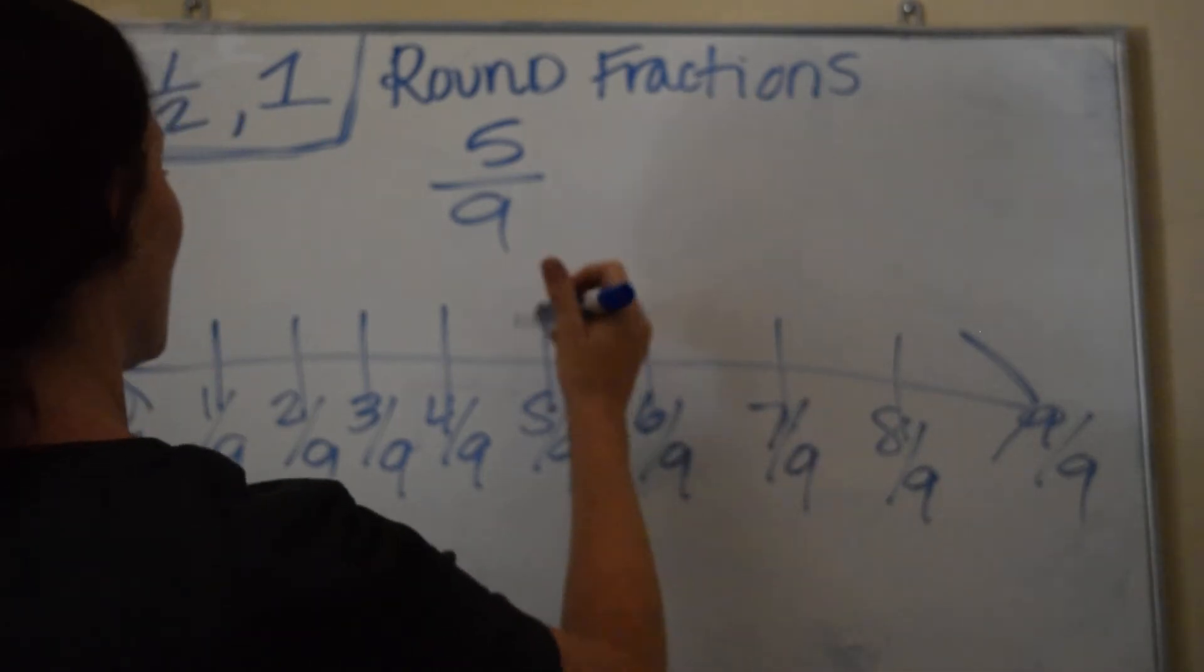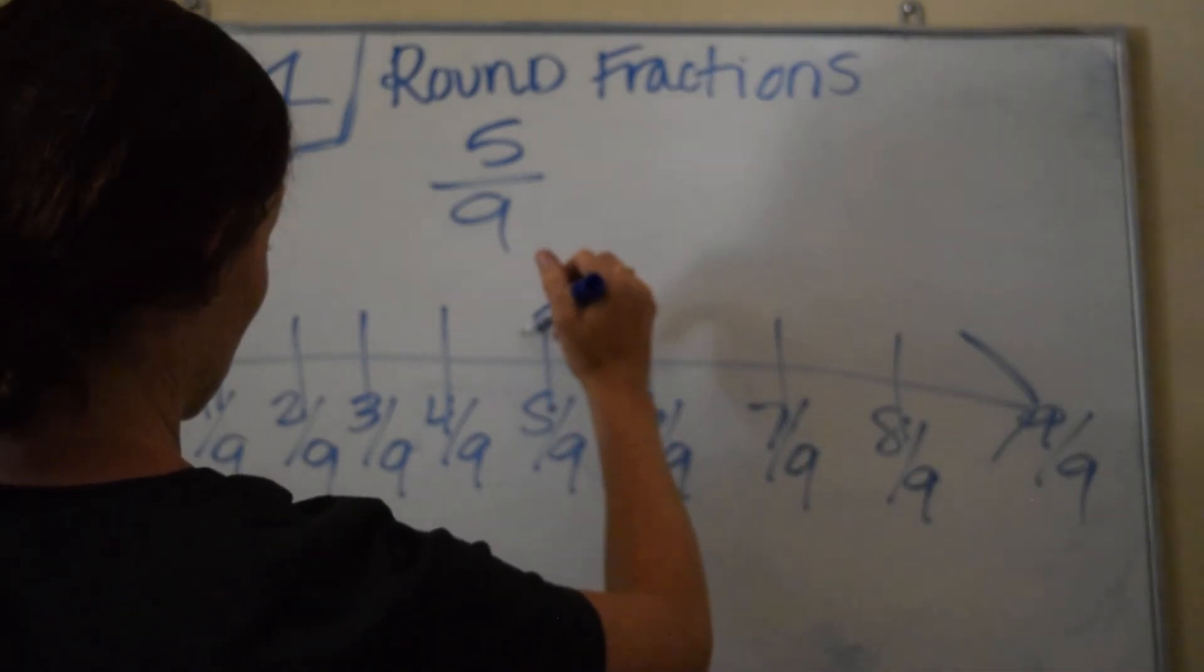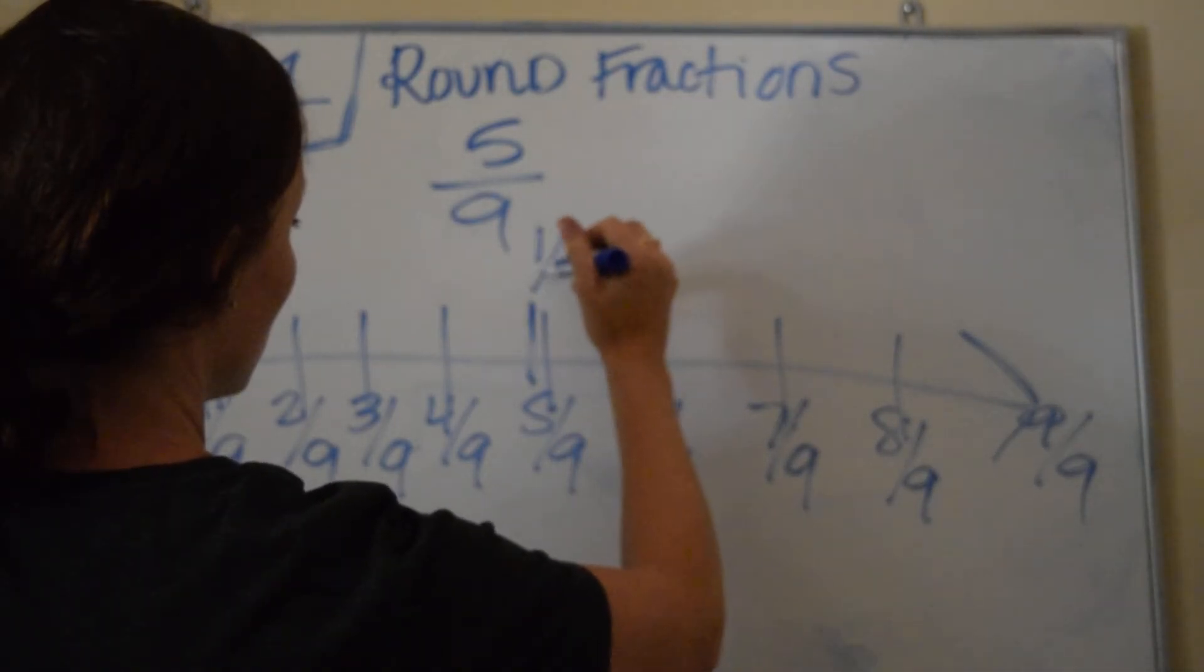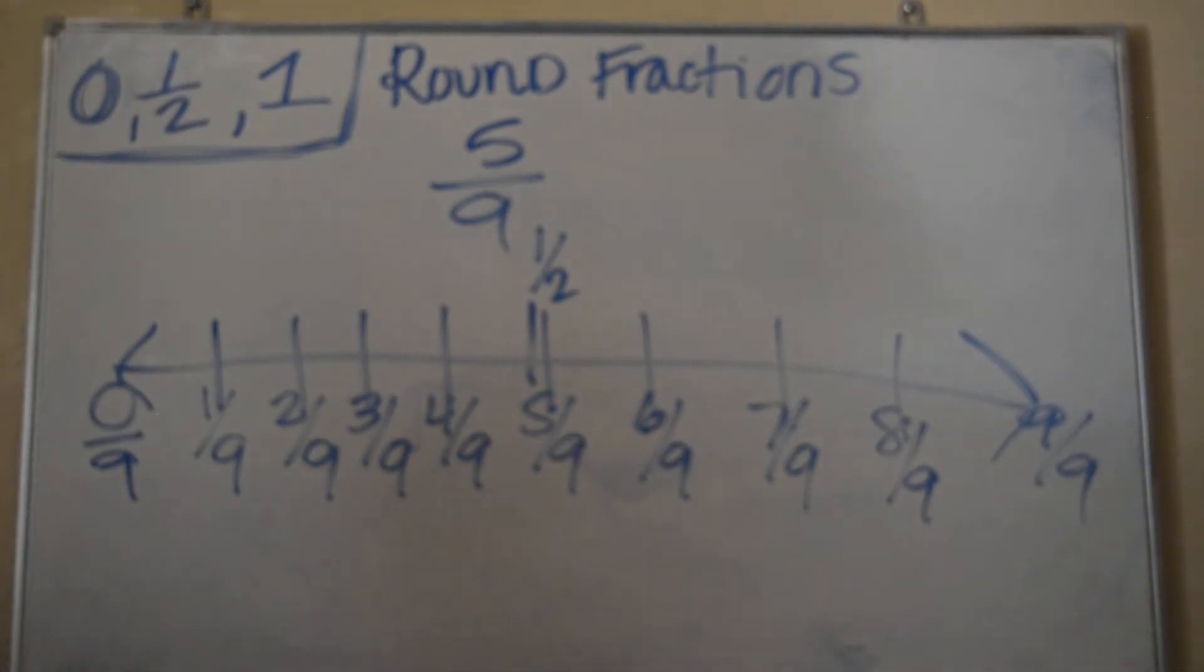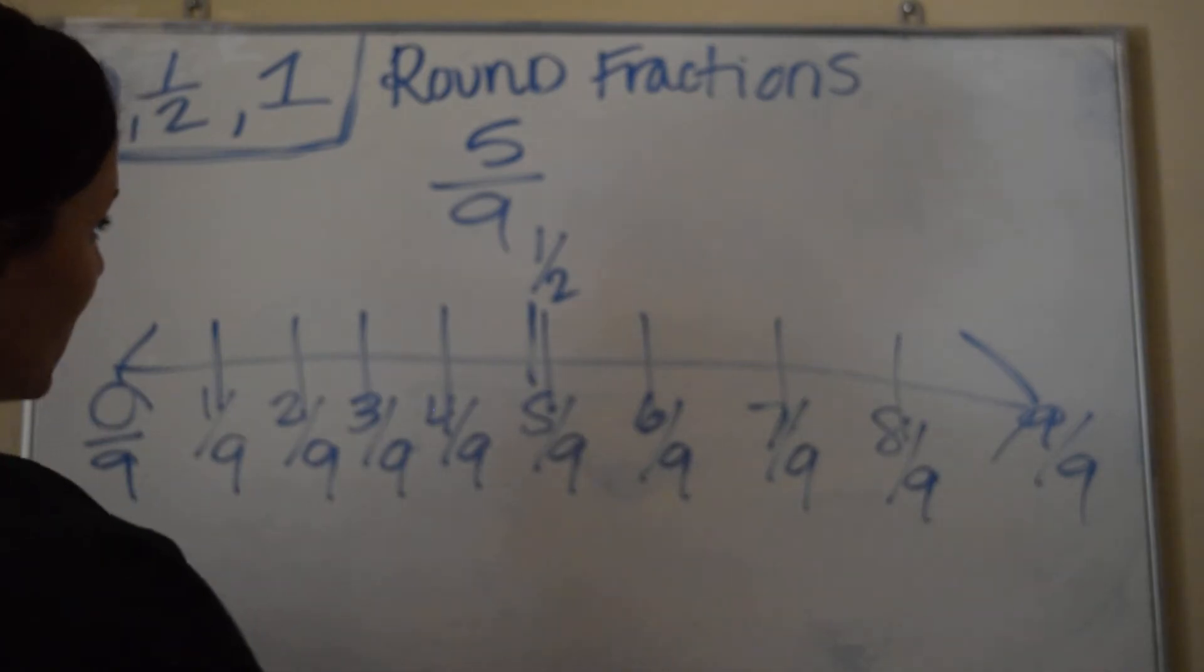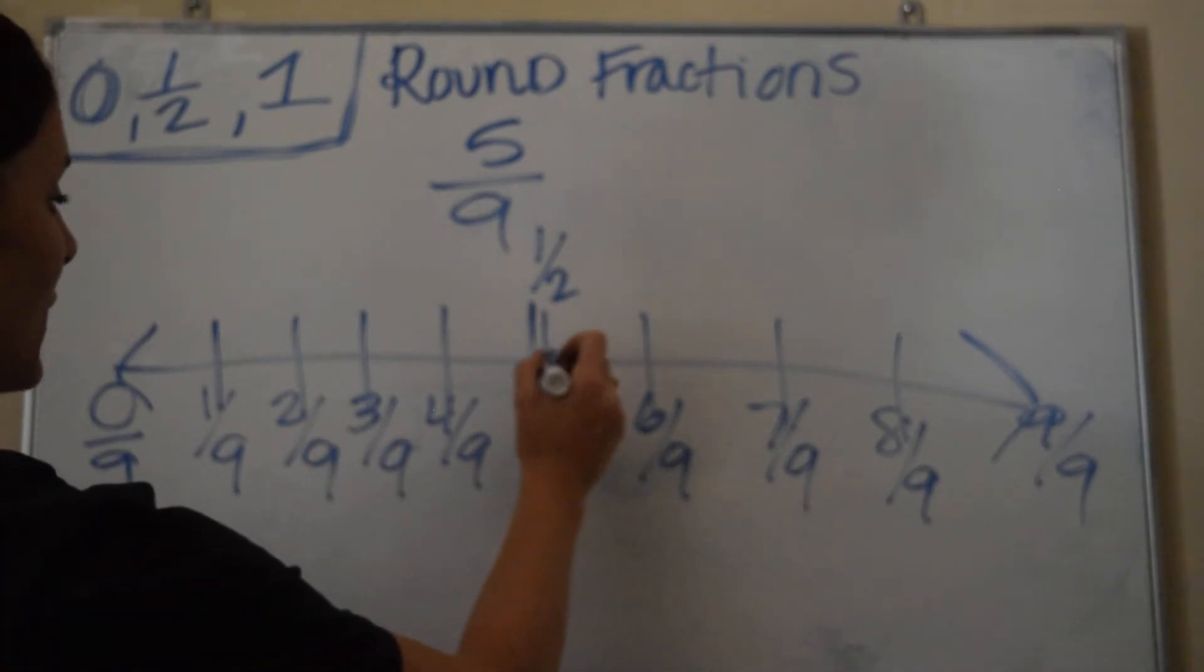One-half is going to be somewhere right about here. I'm just eyeballing it, but if this was up to scale, like it will be in your book, you'll be able to see where halfway is. So where is 5/9ths? 5/9ths is right next to it, actually.